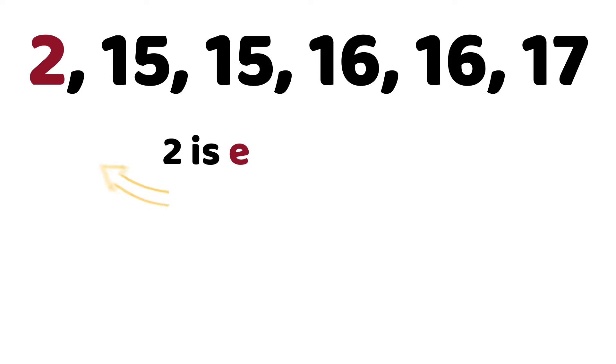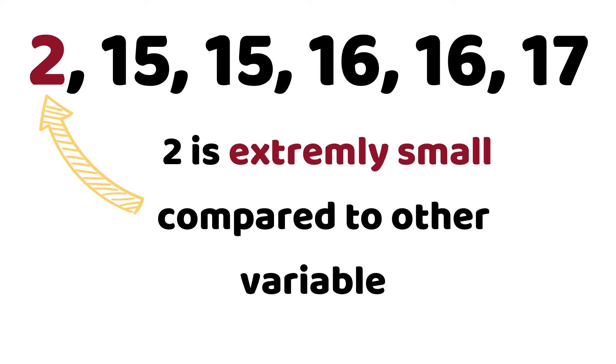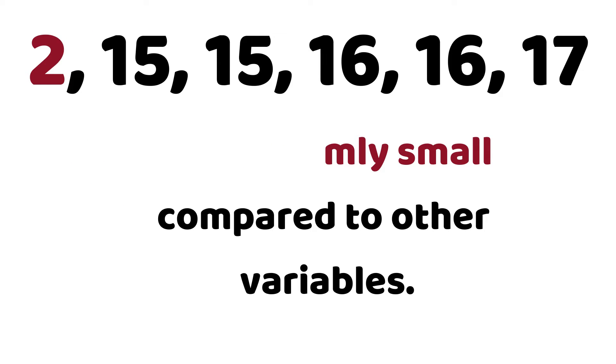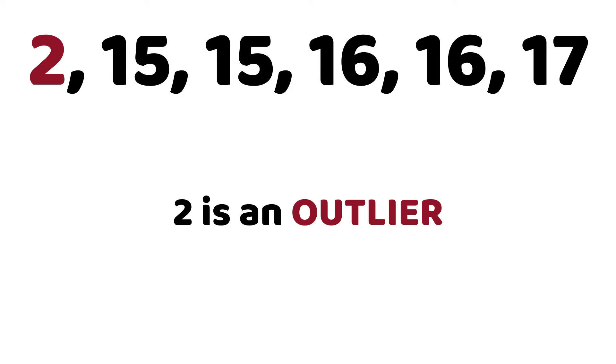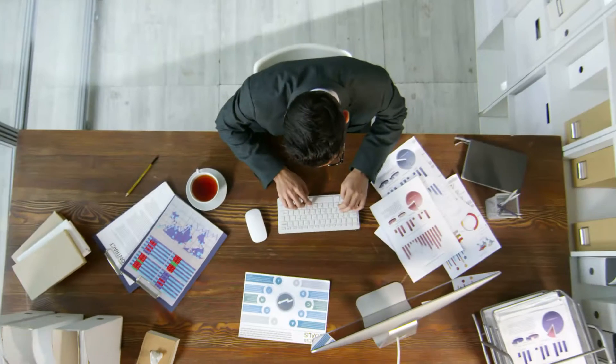Let's take another example. You can also notice that 2 is actually extremely small in value compared to other variables in this data set. So definitely, 2 right here is an outlier.